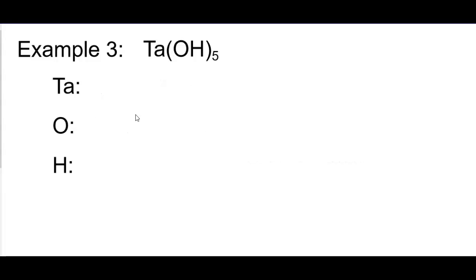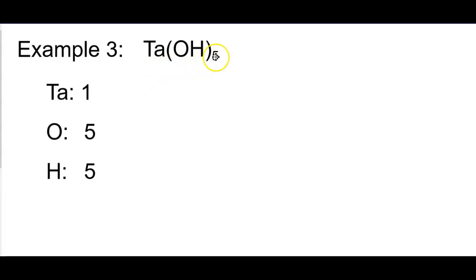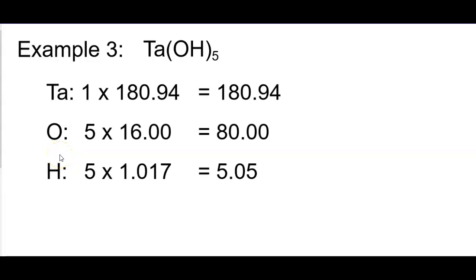Example three. Here we have Ta(OH)₅. So we're going to list the types of atoms we have — Ta, O, and H. We're going to list how many of each. Remember that the parentheses here means that the five will distribute through everything — that's how I got five oxygens and five hydrogens. So we list the number of atoms of each after listing the types. We look up their numbers off the periodic table, multiply across, and then sum that value.